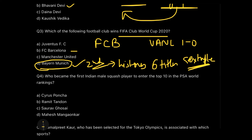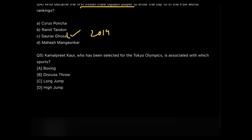Question four: who became the first Indian male squash player to enter the top 10 in the PSA World Rankings? The answer is Saurav Ghosal, a professional squash player from India. He reached his career-high ranking of number 10 in 2019. This is a huge achievement — just remember that the name Saurav Ghosal is associated with squash.